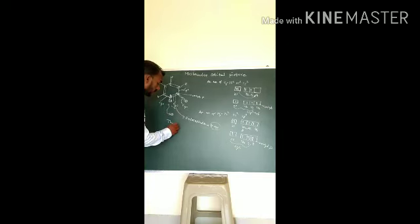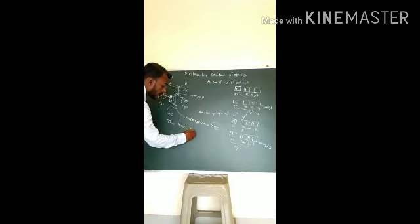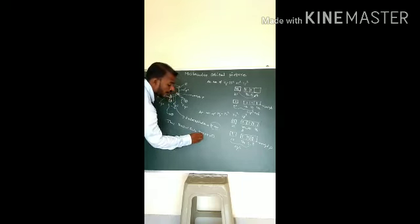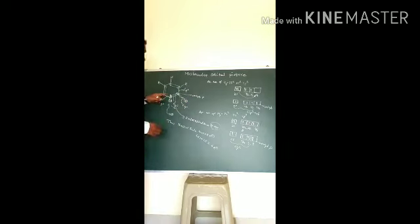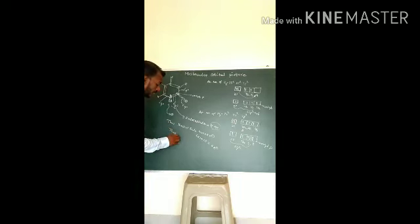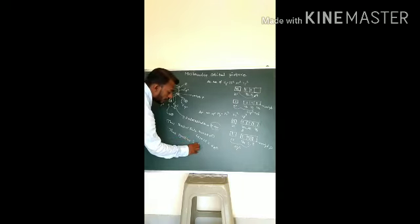According to Hückel's rule, 4n+2 pi electrons: with n=1, it is 4×1+2 = 6 electrons. Counting 1, 2, 3, 4, 5, 6 — there are six pi electrons. Thus pyridine is aromatic in nature. The unhybridized p-orbitals laterally overlap with the unhybridized p-orbitals of adjacent atoms, forming pi bonding. The sp2 hybrid orbitals are involved in sigma bonding. The nitrogen retains a lone pair of electrons available for protonation, and thus pyridine is aromatic.